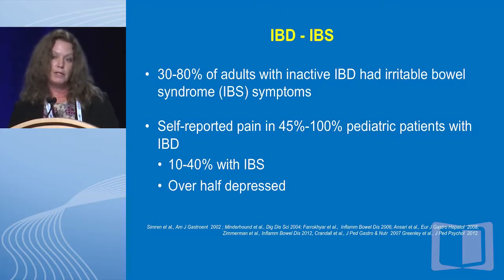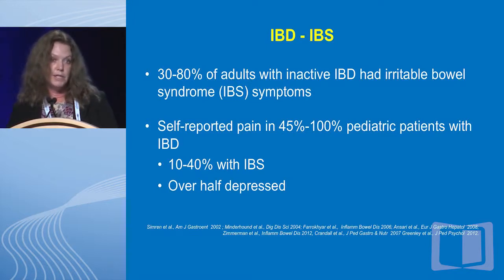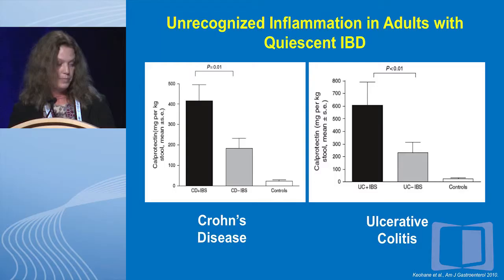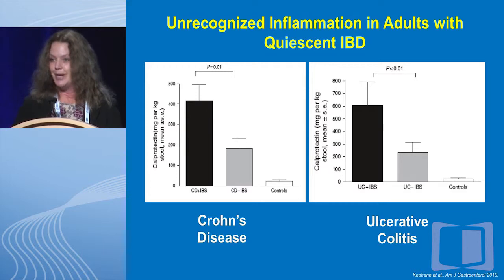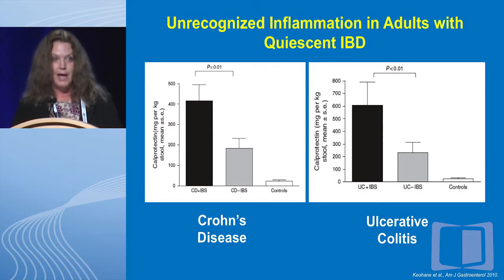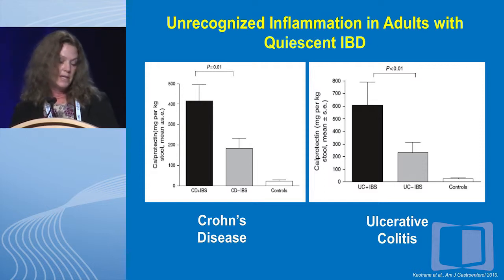Irritable bowel syndrome or persistent pain in the presence of relatively inactive disease is pretty common — 30 to 80 percent of adults depending on the studies, up to 100 percent of pediatric patients, with up to 40 percent having relatively low indicators of disease activity. When we talk about inactive IBD, even if we're having remission in plasma blood levels of inflammatory markers or our disease activity scales, we can still have subtle degrees of inflammation that can be picked up by fecal samples, driving the pain.